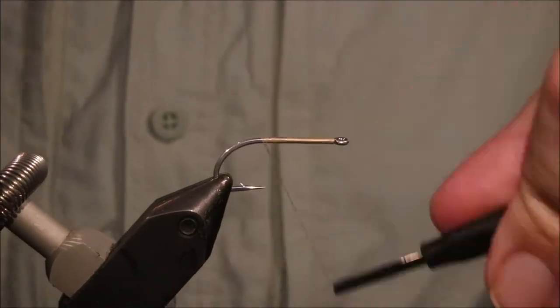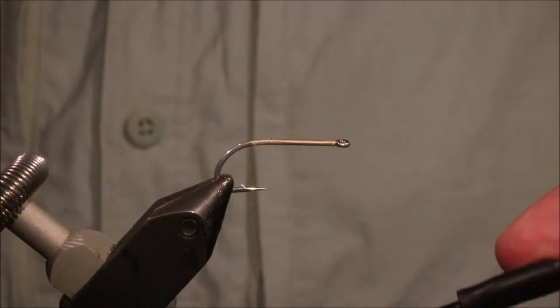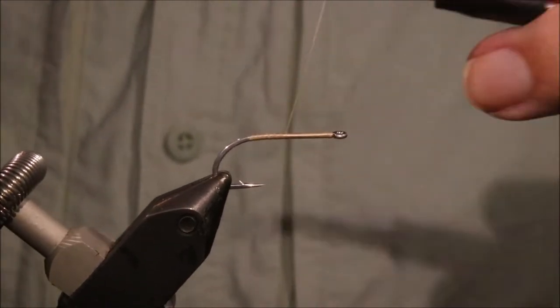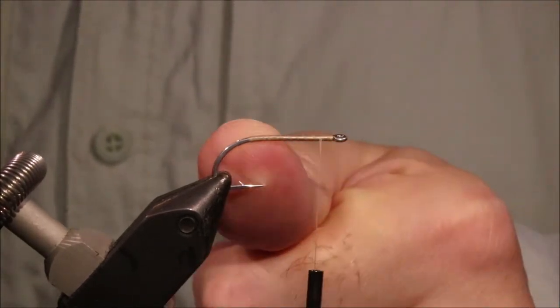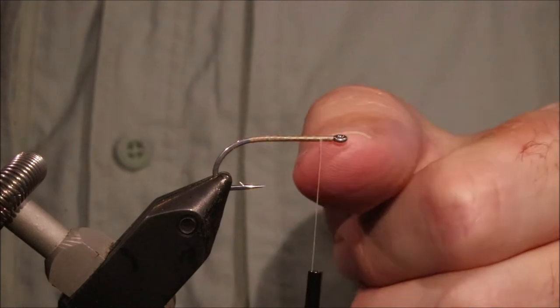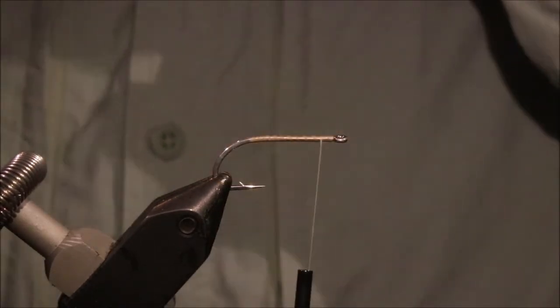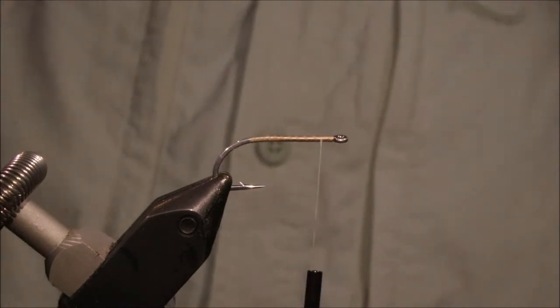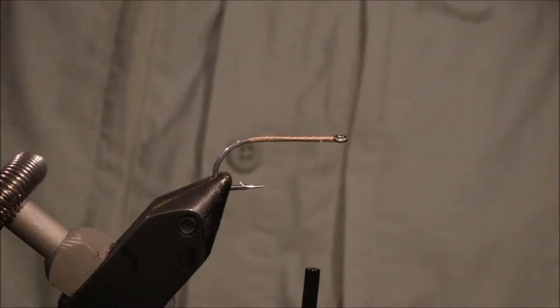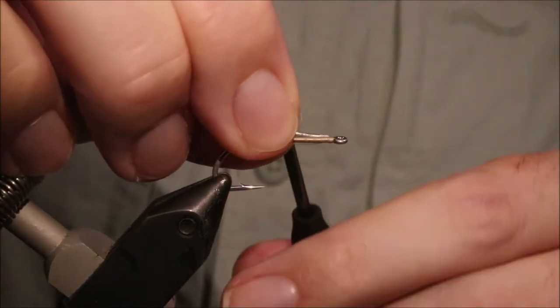I've hooked in my vise an SL11 3H size 8. You can use 8 or 6—that's probably the best for these. I've run on some tan Uni in 6.0, but you can use anything really, it doesn't matter.